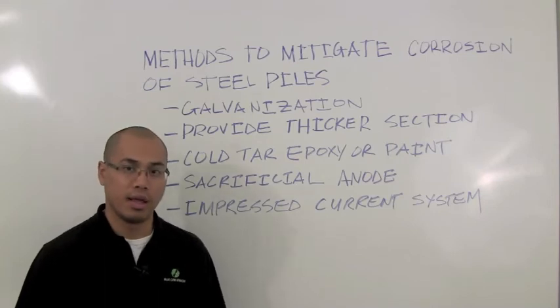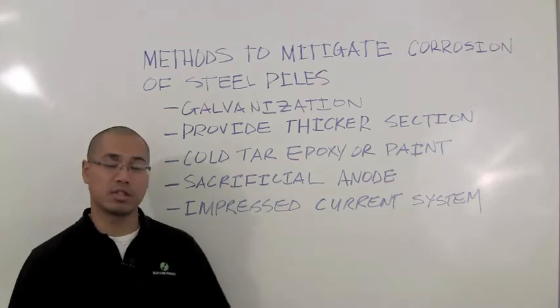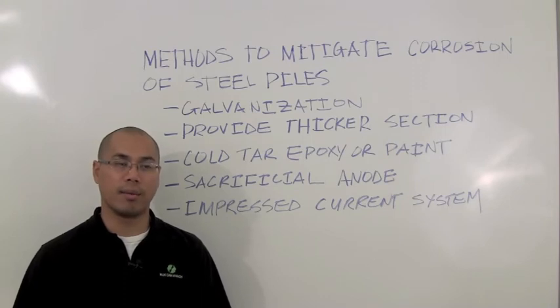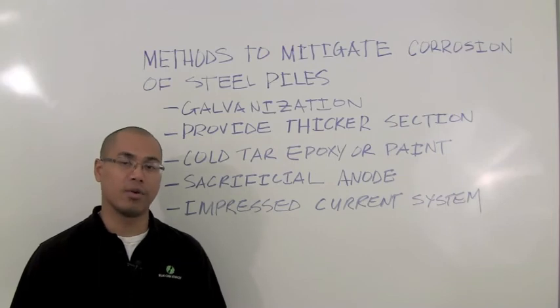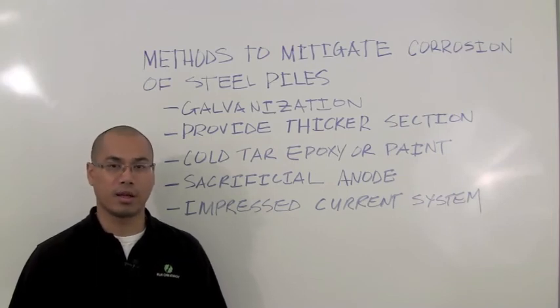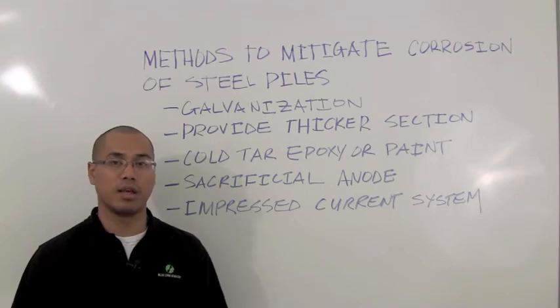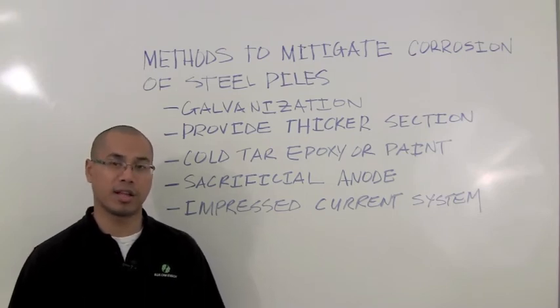The last method is the impressed current system. This method requires you to provide an electric current through the steel piles or the anode and this additional current and voltage interrupts the galvanic reaction, thus protecting the steel piles.